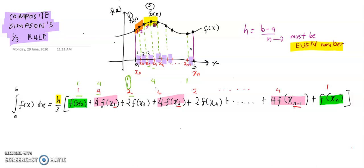The next term is 2f of x2. For f of x2, the coefficient is 2. For this term here, f of x4, the coefficient is also 2. So we can conclude that the coefficient of 2 will be attached to the term that has an even subscript.